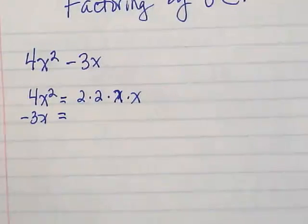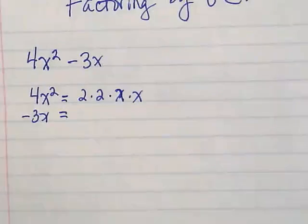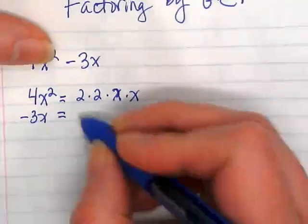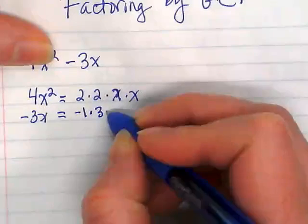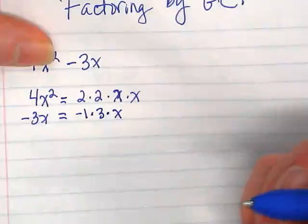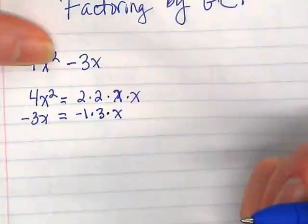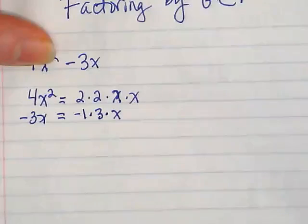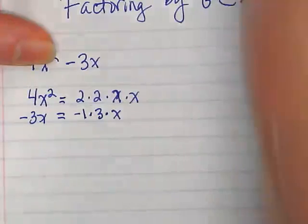What is negative 3x equal? 3 times negative 1. Negative 1 times 3 times x. We tend to put them in order and if there's a negative 1 put it first because it's the lowest of the factors.